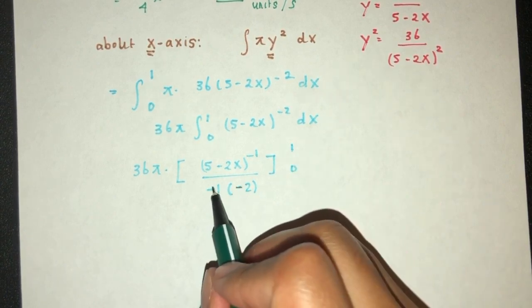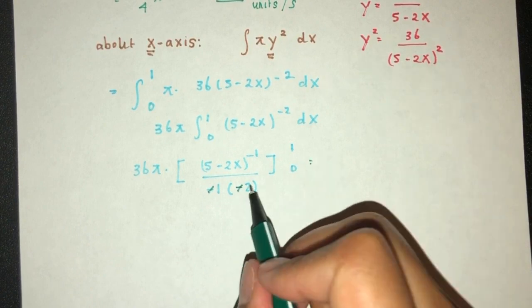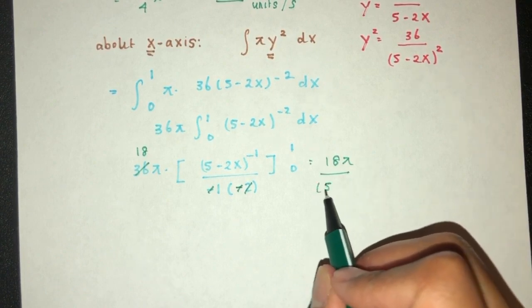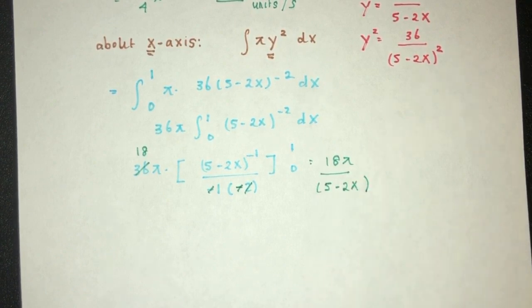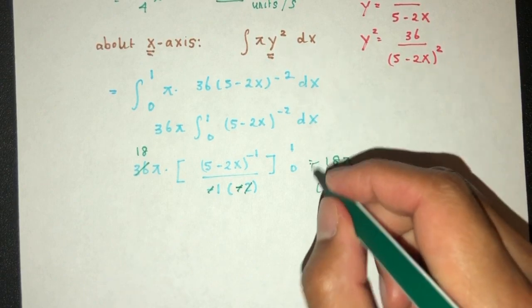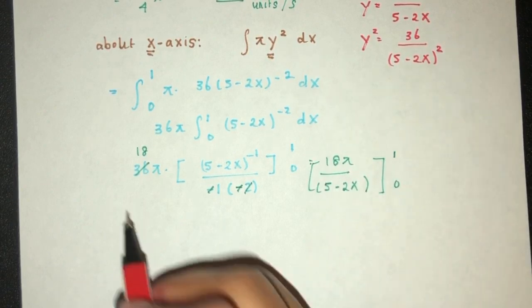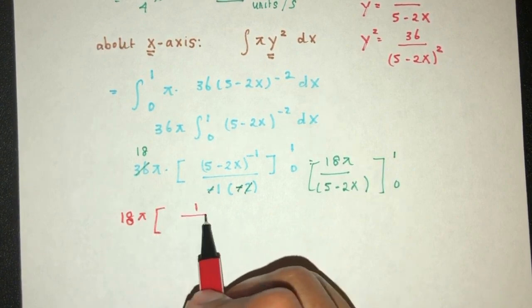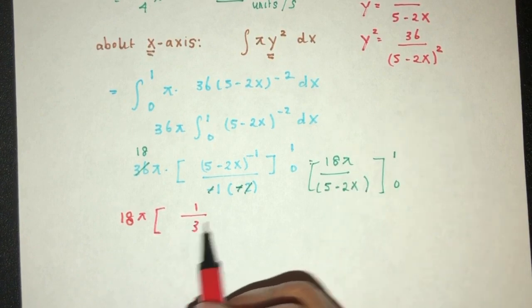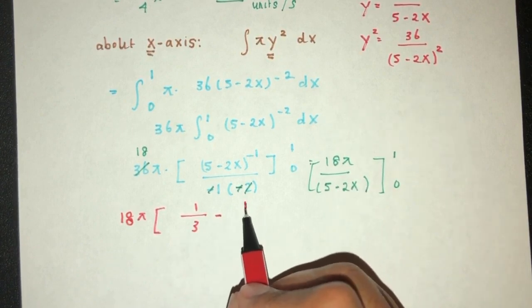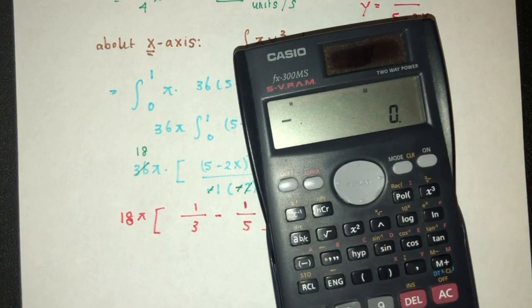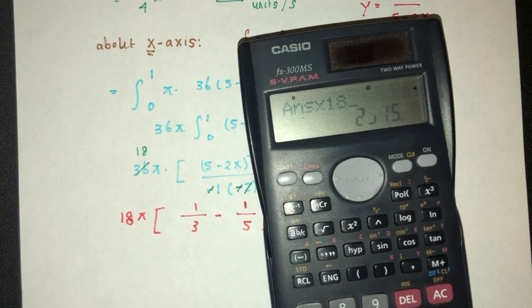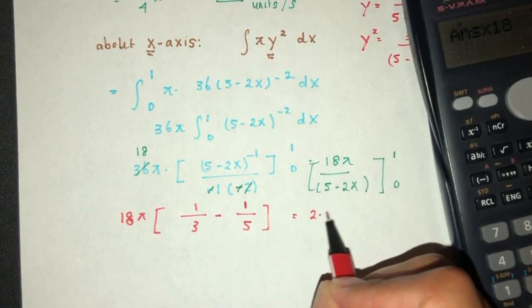We have here, that should be 2. That will be 18. So we have 18π/(5-2x). This will be between the limits of 1, 0. 18π can be outside. And then we have inside 1/(5-2), which is 3, minus 1/5. So 1/3 minus 1/5, times 18, should be this. It should be 2.4π.